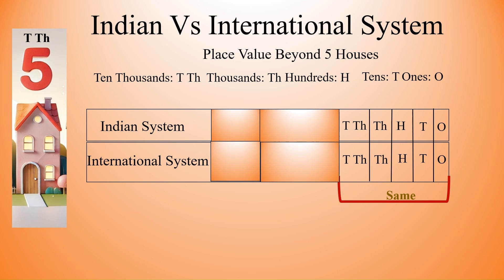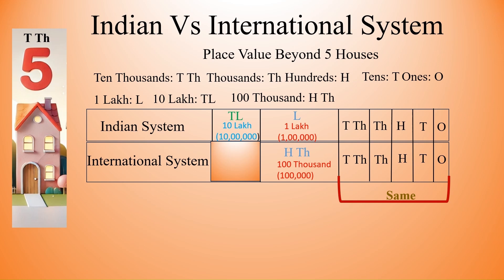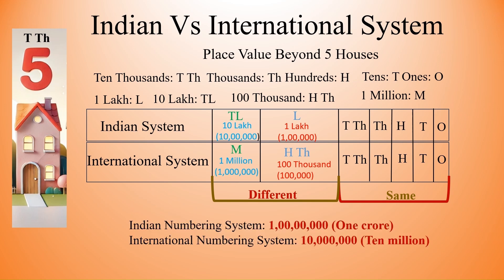Then after that, 1 lakh. 1 lakh is 1 followed by 5 zeros. The position of the commas is also different, and 10 lakhs is 10 followed by 5 zeros. But the same thing in international system: 1 lakh is same as 100,000. The number of zeros are same, but the way the commas are put is different. And 10 lakhs is same as 1 million. In Indian numbering system, 1 followed by 7 zeros is called 1 crore, and in international numbering system the same thing is called 10 million.